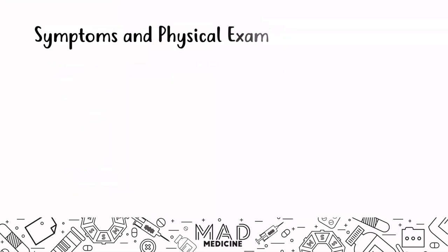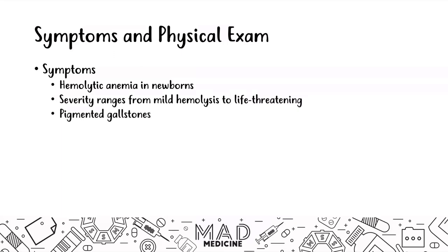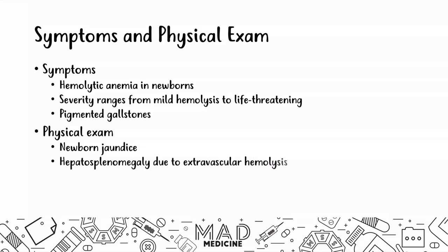The symptoms are very important. In newborns, you're going to see hemolytic anemia, and the severity is going to range from mild hemolysis to life-threatening hemolysis. You will also see pigmented gallstones because of the hemolysis that is occurring. On physical exam in a newborn patient, you might see jaundice and hepatosplenomegaly because of the extravascular hemolysis occurring in the spleen and the liver.